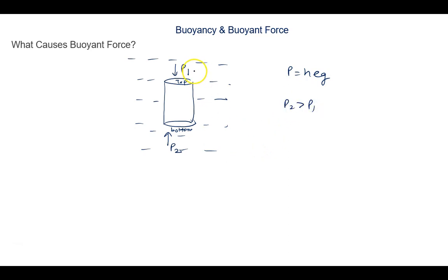So if we calculate the force here, F1, if the area of the top is A and area of the bottom is also A, then F1 will be pressure into area. F2 is also pressure into area. But P2 is greater than P1. So of course, F2 will be greater than F1.